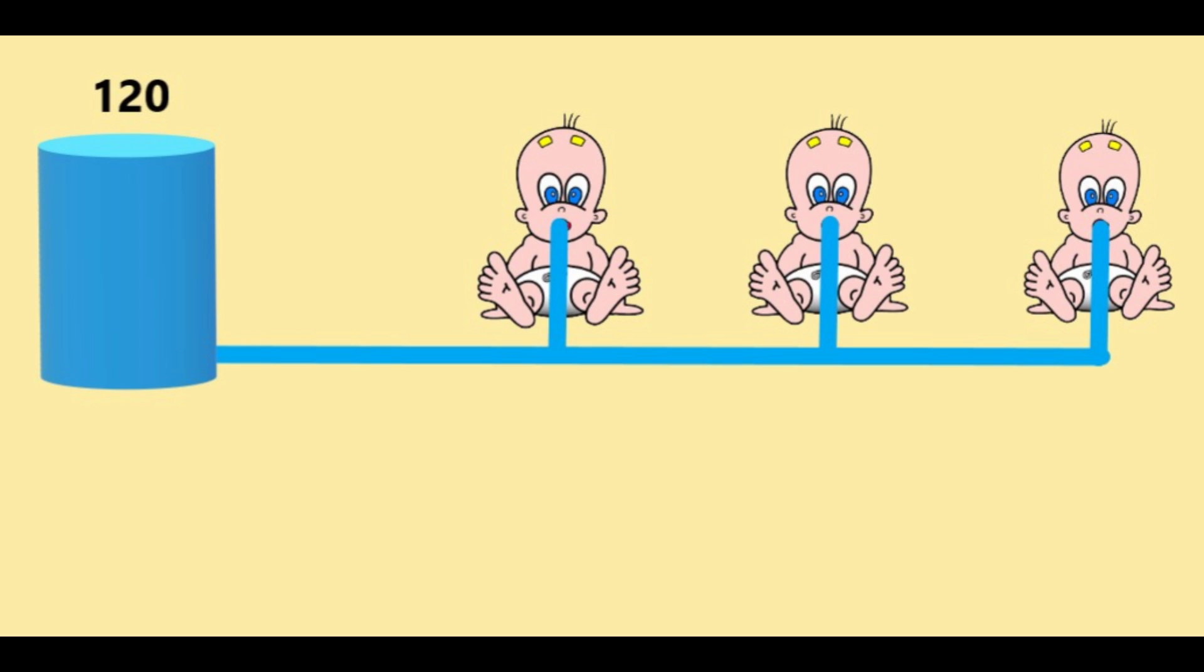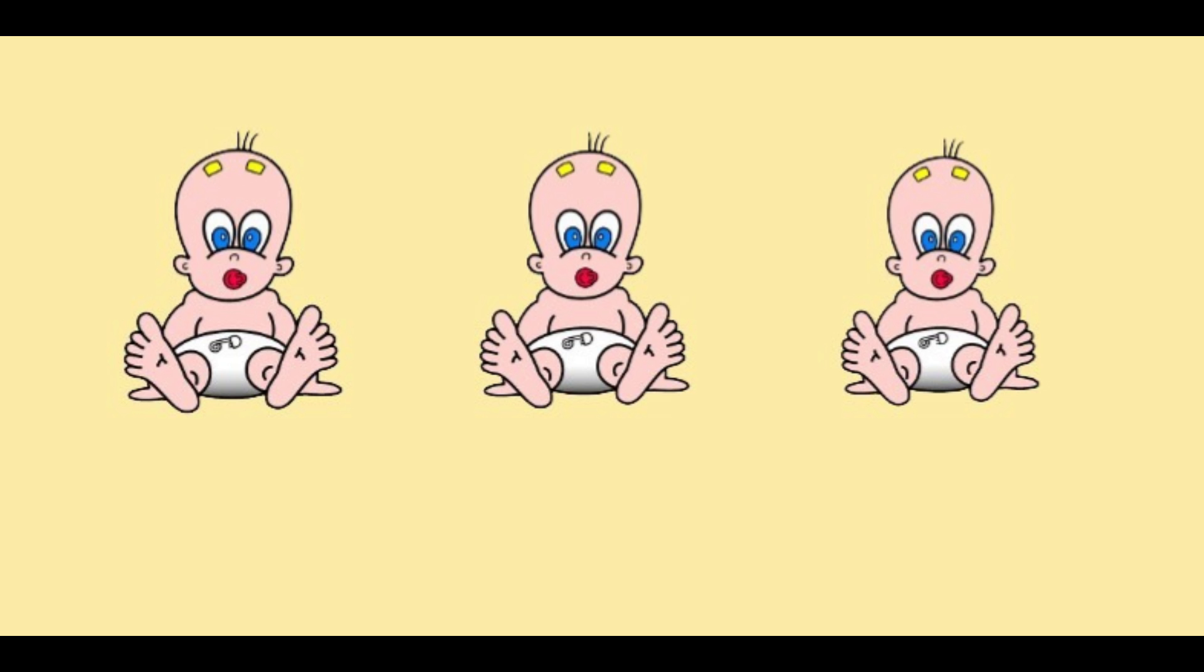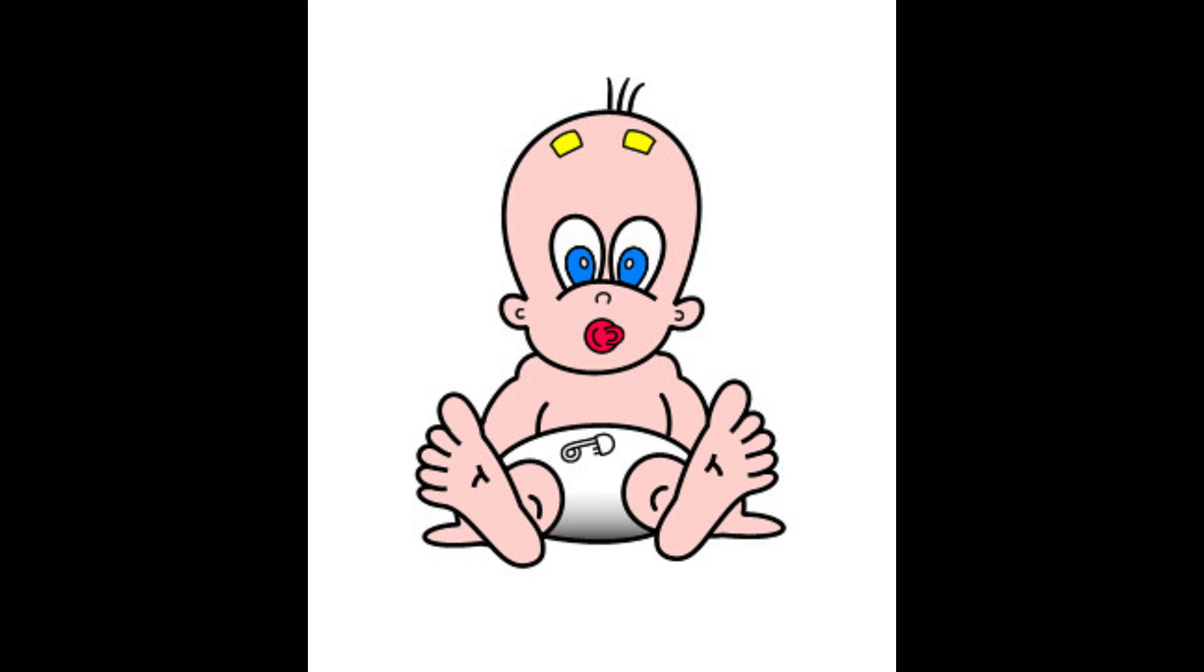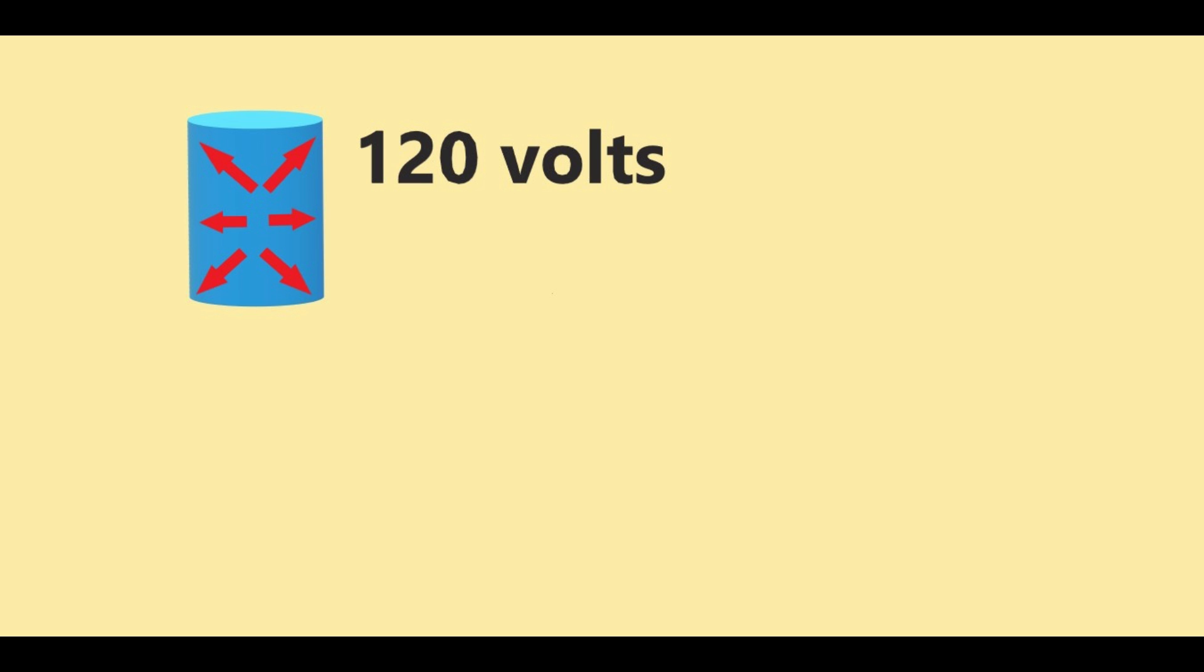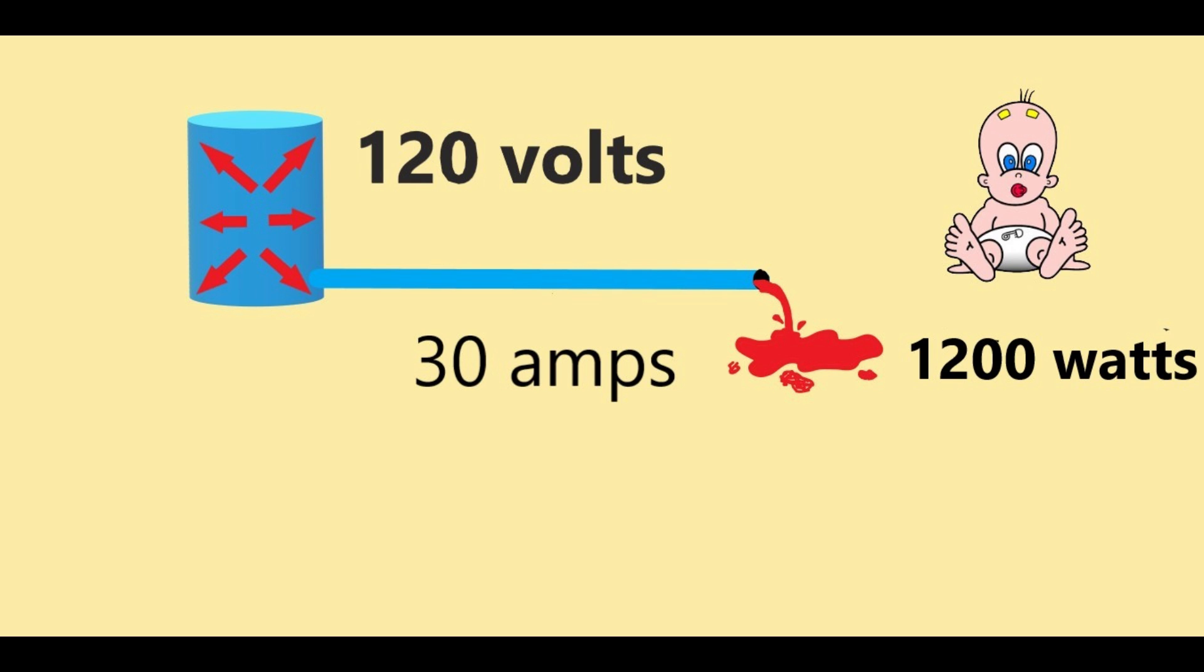The third thing we're going to look at is watts. Each baby needs a certain amount of juice to make them happy. How much they need is their wattage, or watts. Let's say this baby needs 1,200 watts of juice. All right, so now we have a 120 volt source feeding a hose that can allow 30 amps to flow, and it's going to be consumed by this hungry baby that needs 1,200 watts to keep it happy. Got it?